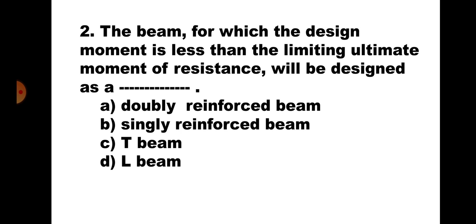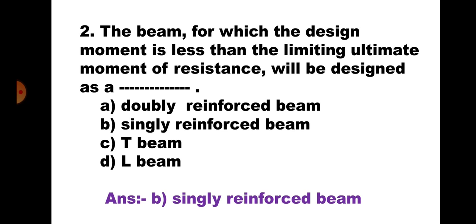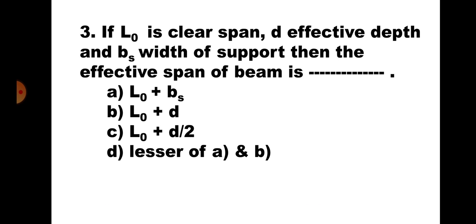Question number two: The beam for which the design moment is less than the limiting ultimate moment of resistance will be designed as — (a) doubly reinforced beam, (b) singly reinforced beam, (c) T-beam, (d) L-beam. If the bending moment is less than Mu,lim (the balanced section moment), it can be designed as a singly reinforced section. The correct answer is (b) singly reinforced section.